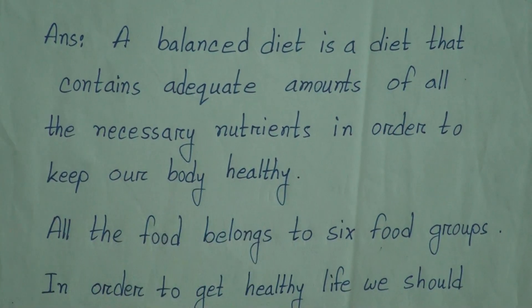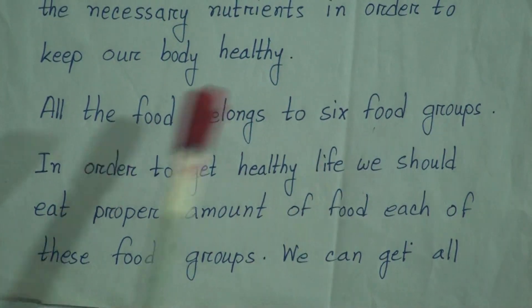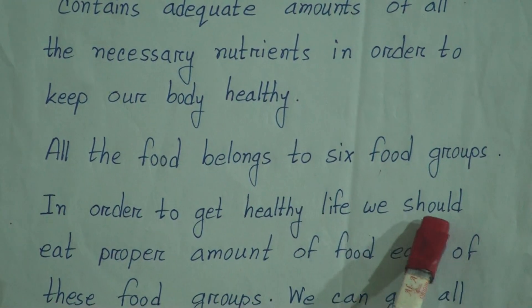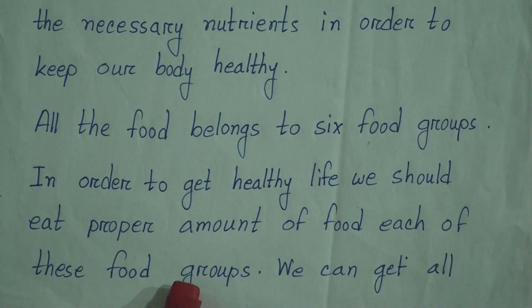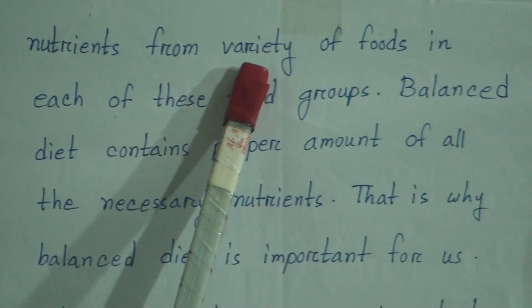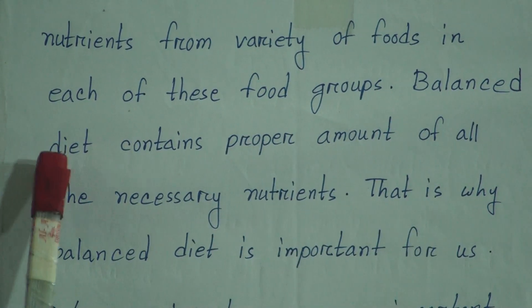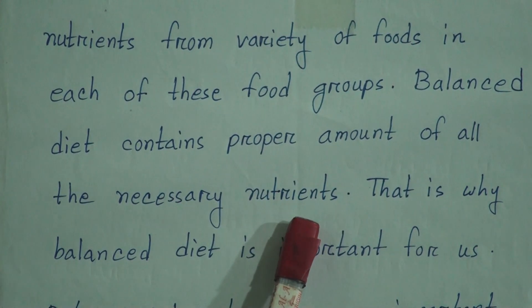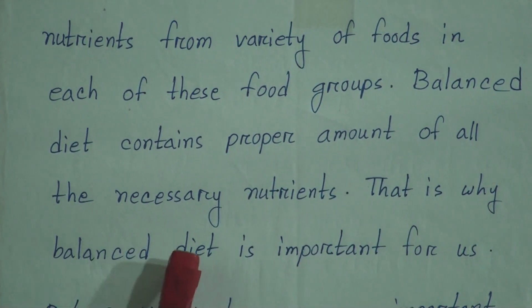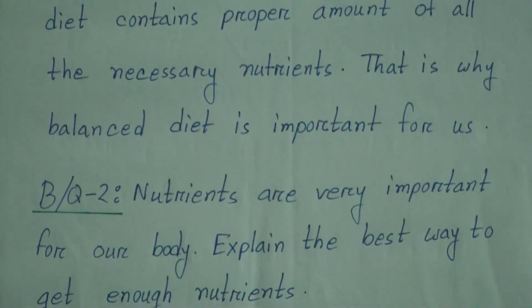All the food belongs to 6 food groups. In order to get a healthy life, we should eat a proper amount of food from each of these food groups. We can get all nutrients from a variety of foods in each of these food groups. Balanced diet contains proper amount of all the necessary nutrients. That is why balanced diet is important for us.